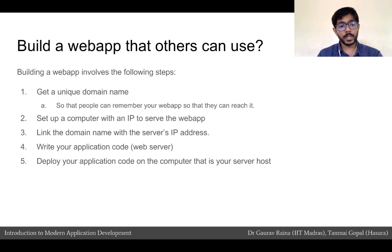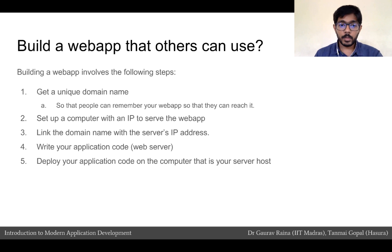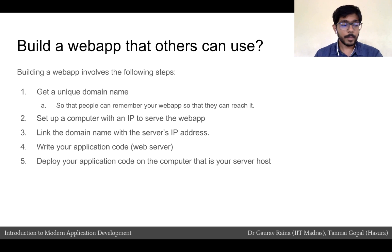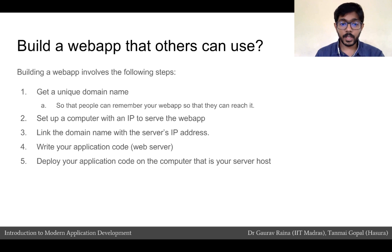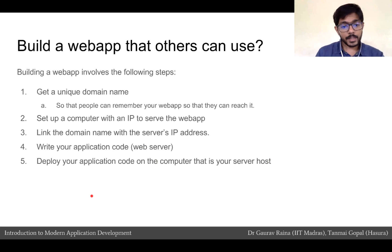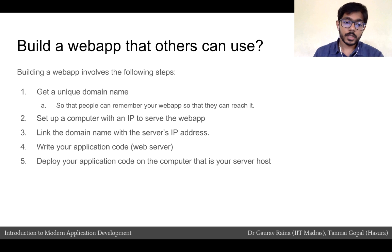So if we have to build our own web app, we would have to proceed with the following steps. First, get a unique domain name so that people can remember and reach our web app. Next, get a computer with an IP to serve the web. Step 3 is to link the domain name to the server's IP address. Once the server host is set up, we write the application code — the web server software — and finally deploy that code onto the server host.